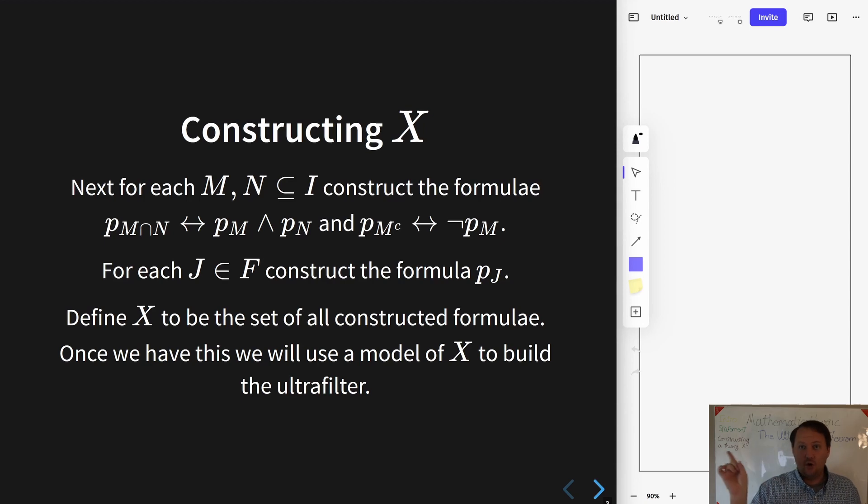That's where, in a moment, compactness is going to come in because we'll argue that X is satisfiable by showing that every finite subset of X is satisfiable. And then we'll use the model that satisfies X to help us build the ultrafilter. So we start from filters, we go down into the world of the formulae that is saying stuff about them, we use compactness in this world of formulae, and at the end we use it to somehow translate back into the world of filters.